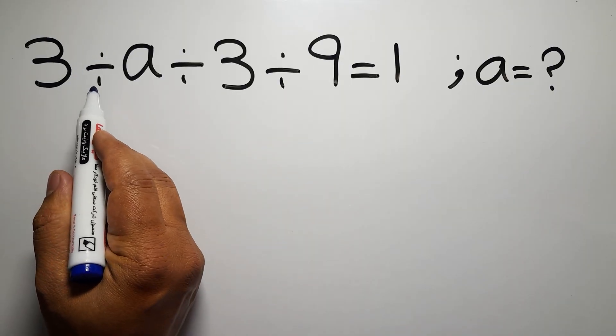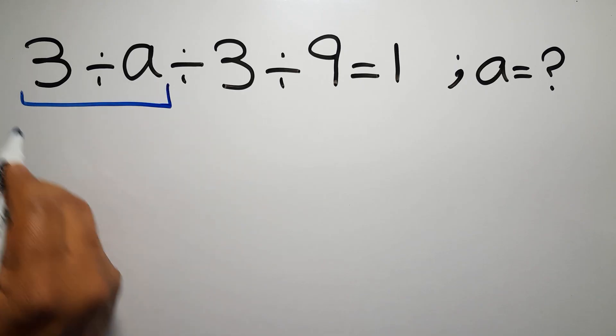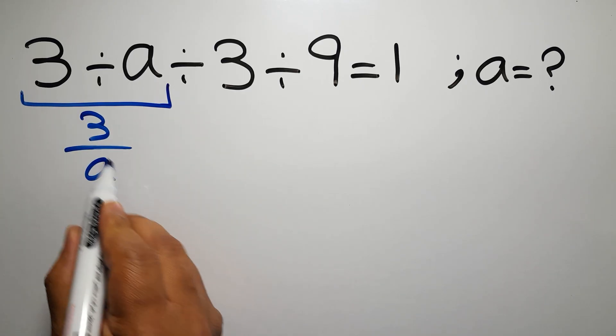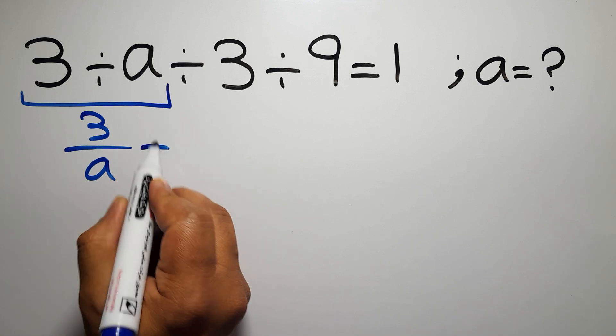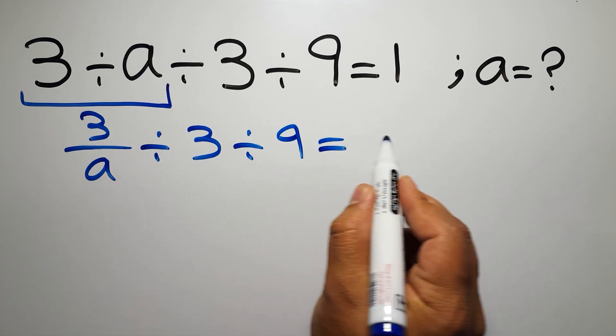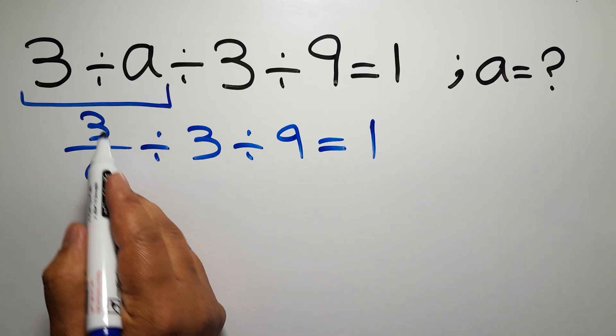So first we have to do this division. 3 divided by a can be written as 3 over a. So 3 over a divided by 3 divided by 9 equals 1. Now we have to do this division, this fraction divided by 3.